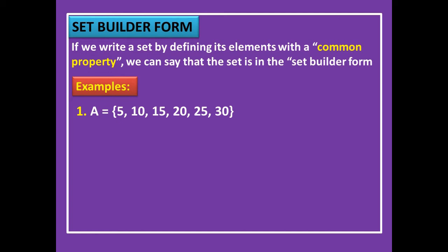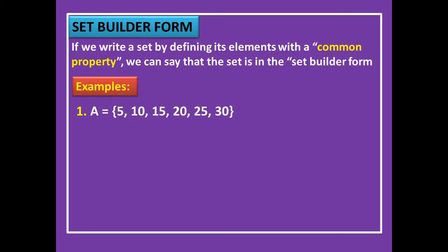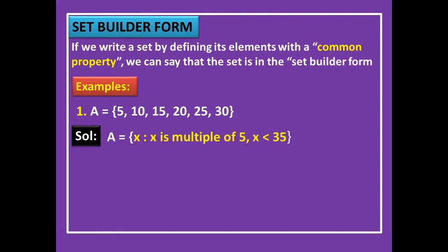Now let us look at the set builder form — we need to check for a common property. Take A = {5, 10, 15, 20, 25, 30}. All these are multiples of 5. Therefore A = {x : x is a multiple of 5 and x < 35}, since the last multiple given is 30 and the next would be 35.